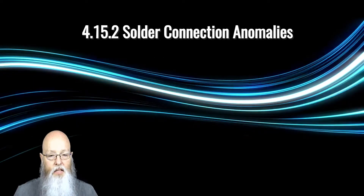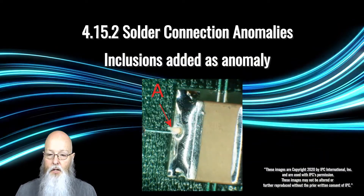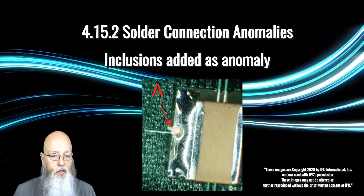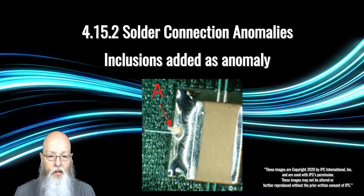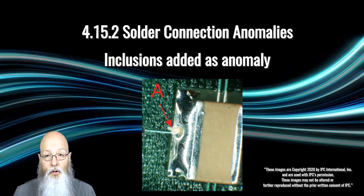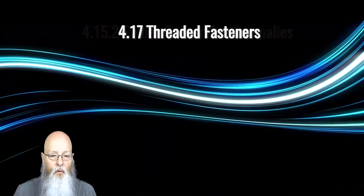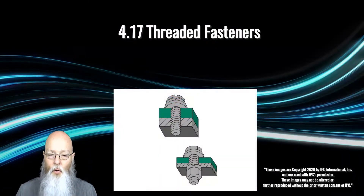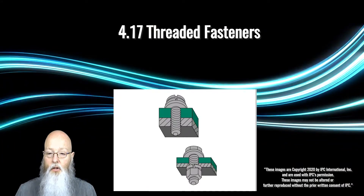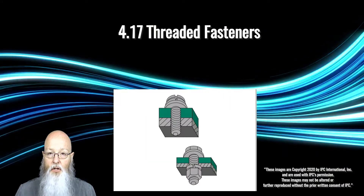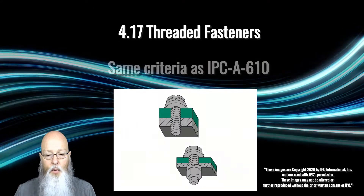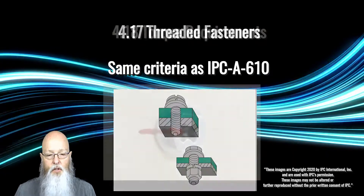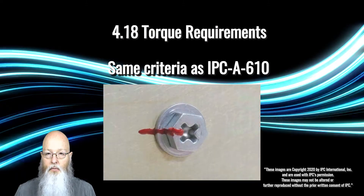The next change is that inclusions in the soldered connection has been added to Table 4-1 Solder Connection Anomalies. Inclusions can be anything that should not be present in the soldered connection — and they are a defect for all classes. Sections 4.17 and 4.18 are new sections in Revision H. 4.17 adds threaded fastener criteria to the process verification of J-STANDARD-001. The content appears to be the same criteria used in the IPC-A-610. The same is true for the torque requirements now in 4.18.